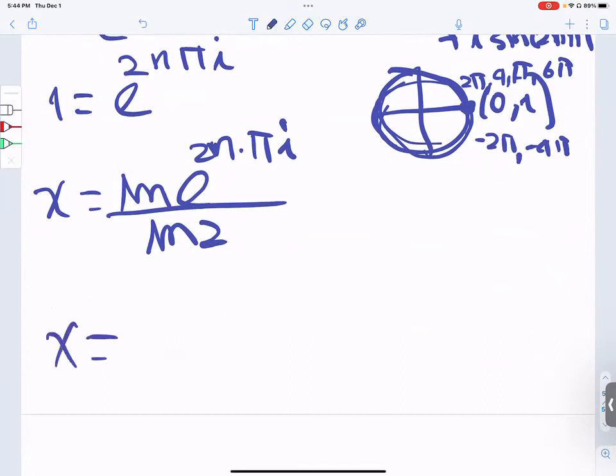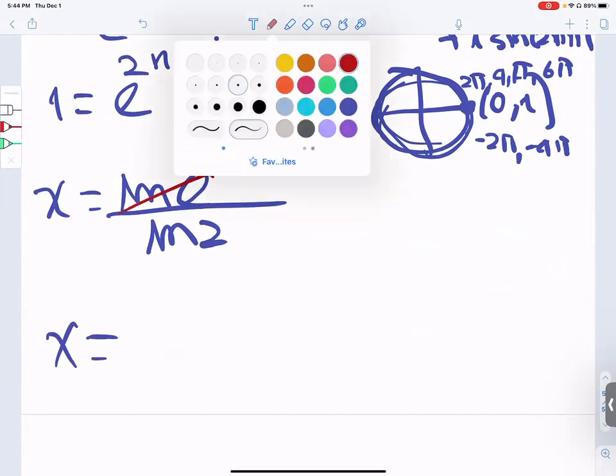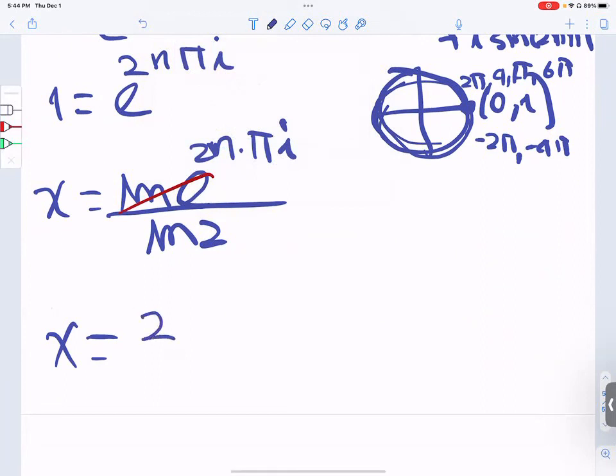x equals—I will cancel the ln because they're inverse—and the final answer is 2n pi i divided by ln of 2.